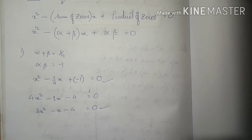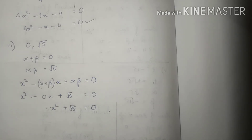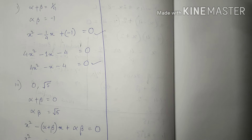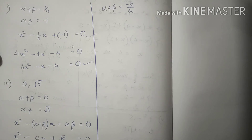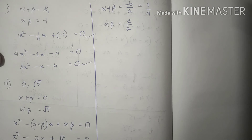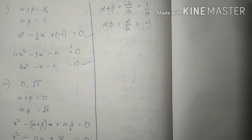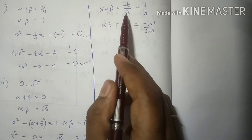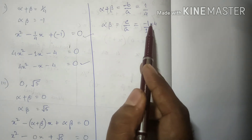Both simplified and unsimplified forms are correct answers for question 2, part 1. For part 3, substitute the given values to get the required equation. There is also a second method: directly find values of a, b, and c. Since alpha plus beta equals minus b by a and alpha times beta equals c by a, equate a to 4, then multiply accordingly to get a equals 4, b equals minus 1, c equals minus 4.